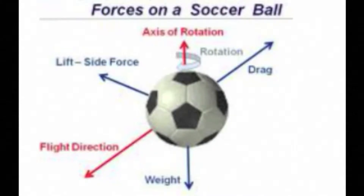This shows the forces that affect the ball when it is kicked. At the top, you see the axis of rotation. When you want to curve the ball, you want it to rotate, so you hit it on the side with lift and side force. Also, if you strike from the bottom, it gives flight direction, and the weight pushes down on the ball. The drag on the ball is what keeps it from flying forever.